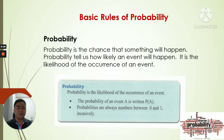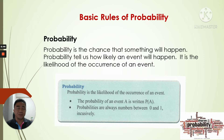Now what is probability again? That is the chance that something will happen. Probability tells us how likely an event will happen. It is the likelihood of the occurrence of the event. So it's like what we have before on the principle of counting — that's how the event will occur from an experiment.